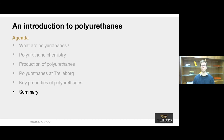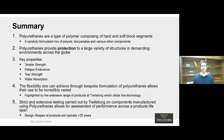Now I'm going to summarise what I've spoken to you about today. Firstly, polyurethanes are a type of polymer composing of hard and soft block segments. They're carefully formulated in a way that is very flexible to fine-tune the final mechanical properties. These polymers provide protection to a large variety of structures in highly demanding environments all over the world. They have key properties such as tensile strength and fatigue endurance, as well as different properties like tear strength and water absorption.